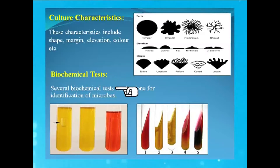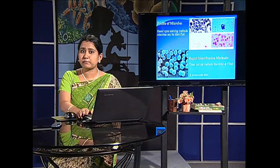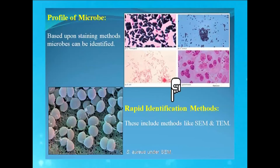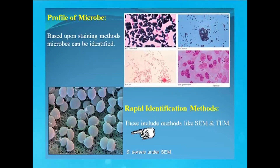One can also identify a microbe by observing its profile, which can be done by various methods — staining is one of them. There are also rapid identification methods by which a microbe can be identified, which include electron microscopy. This is the picture of S. aureus under scanning electron microscope.